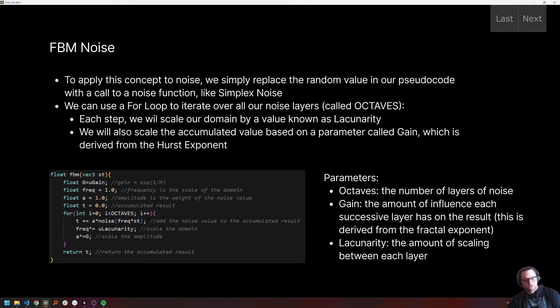And we also already know what a for loop is. So we have a for loop we're going to iterate over all of our sub steps. Each of those sub steps is going to be called an octave. We're going to have a scale for our domain. That's going to be known as a lacunarity, which is going to be how much we scale our domain each excess successive sub step. And then finally we'll have a parameter called gain, which is derived from our Hurst exponent. Remember that's the fractal dimension of self-similarity. And so we use that to back into a parameter called gain, which is basically how much our amplitude is going to be scaled each successive sub step as well.